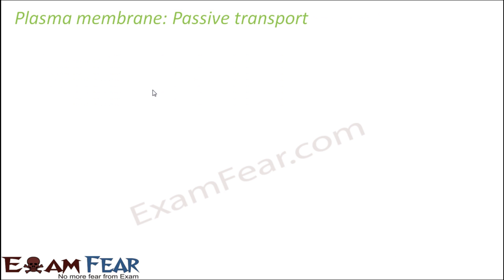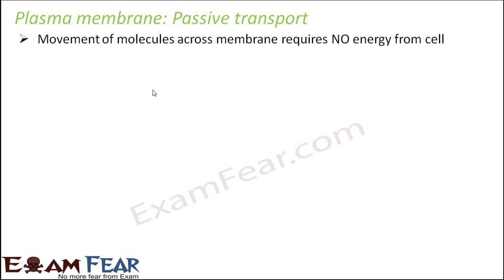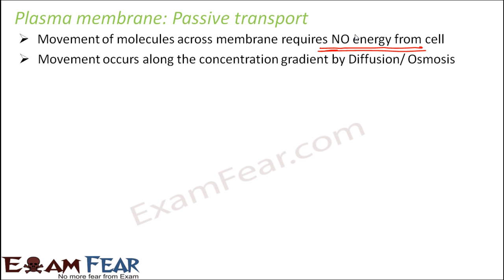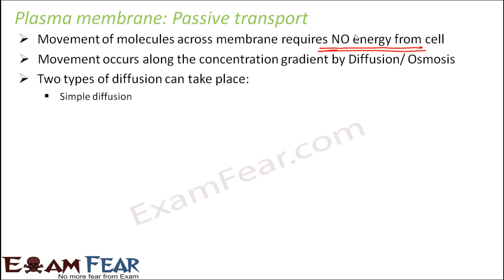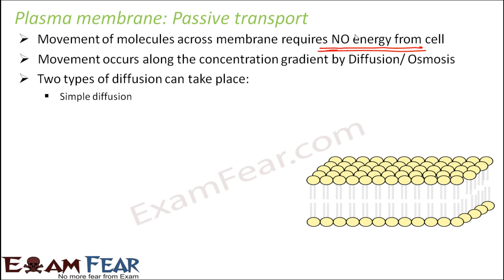In passive transport, movement of molecules across the plasma membrane requires no energy from the cell. Movement occurs along the concentration gradient by diffusion or osmosis — diffusion for particles or gases, osmosis for water. Diffusion itself can be of two types: simple diffusion and facilitated diffusion.